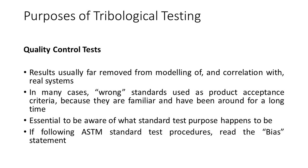The results of many of these tests are usually far removed from modelling of and correlation with real systems. In many cases, wrong standards are used as product acceptance criteria because they are familiar and have been around for a long time. By wrong, we mean that they poorly simulate the end application and are no guide to performance in the real application. Quality control tests have their purpose, but it is essential we are aware of what that purpose happens to be.